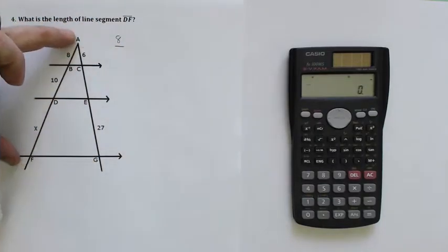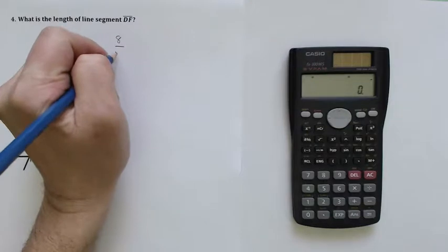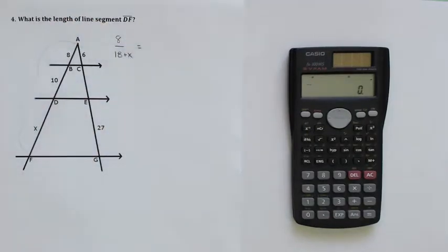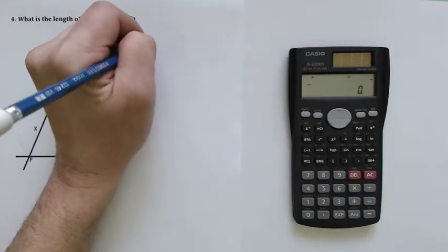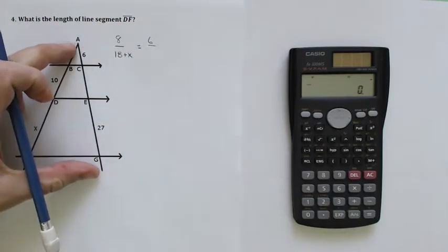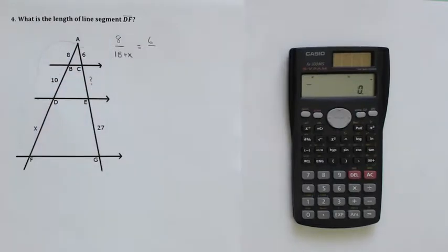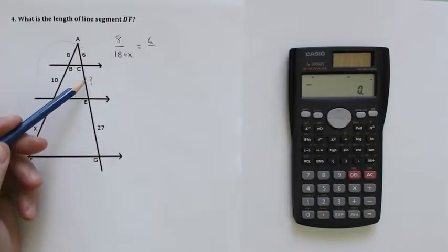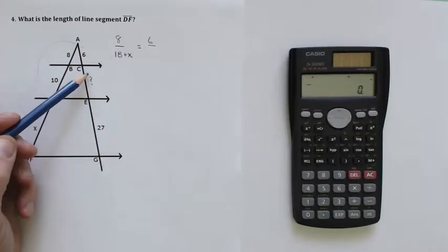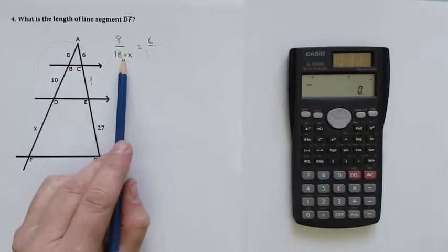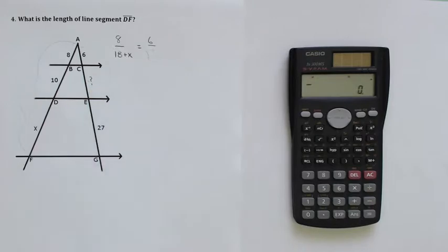careful now, 18 plus X must be equal to 6 over this side. The problem here is I don't have all that information. So I need to get this piece here to put a number down here so that I can do my cross multiplication and solve for X. I can't have two unknowns in the same problem.